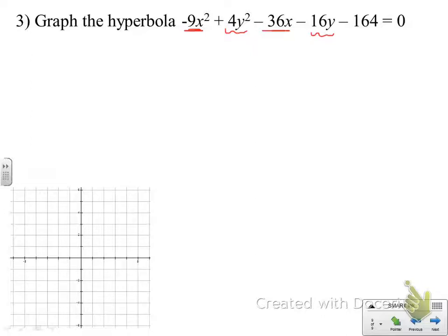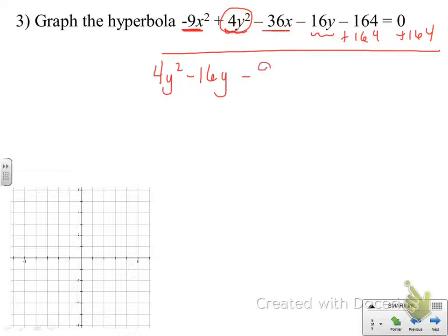So the first thing we're going to do is move the constant over to the other side. And then we're going to do some rearranging here. Because the x squared term is negative, we want the x's as the second variable in our equation. Notice that my y squared has a positive 4, so I'm going to write 4y squared minus 16y. Keep those like variables next to each other, minus 9x squared minus 36x equals 164. Now, very much like ellipses, we're going to have to factor out these coefficients that are in front of the squared variables.